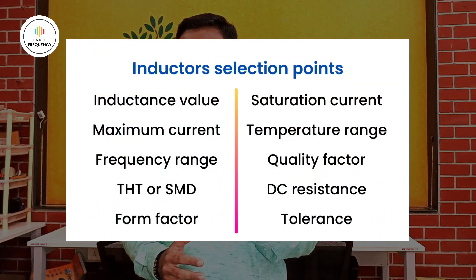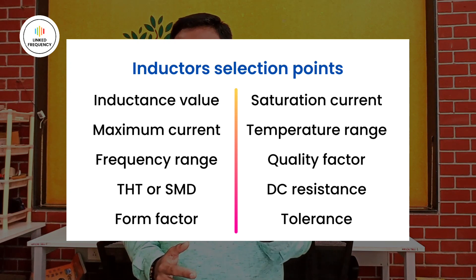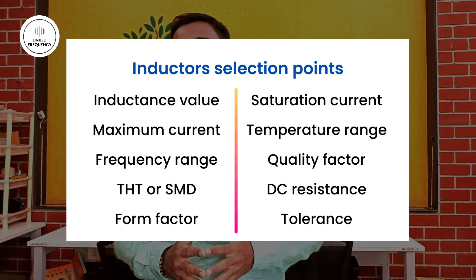There are several parameters to consider when selecting an inductor, as it is a very sensitive part of design work and a specific skill that design engineers need to acquire. Key parameters include: inductance value, maximum current, frequency range, through-hole or SMD form factor, saturation current, temperature range, quality factor, DC resistance, and tolerance. Some of these are easy to calculate, while others are more difficult — but with today's technology and available information, identifying these parameters is manageable.